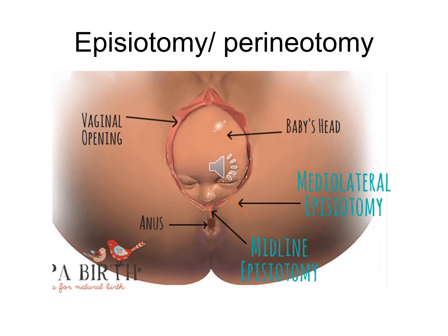Episiotomy, also known as perineotomy, is a surgical incision given to the perineum and posterior wall of the vagina, usually performed during the second stage of labor to quickly enlarge the opening for the baby to pass through. There are two types: median and mediolateral. The median incision begins from the frenulum where the two labia minora meet and extends to the external anal sphincter — in this case, there is definite damage to the perineal body. The mediolateral incision begins from the labia minora and extends at an angle of 45 degrees downward.